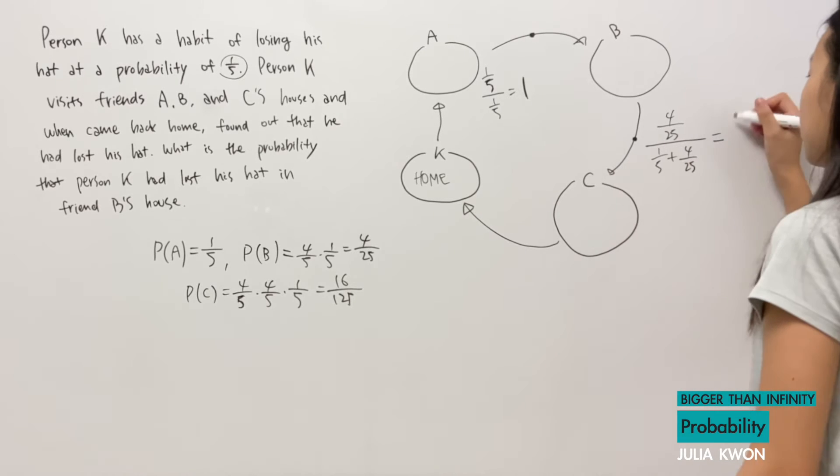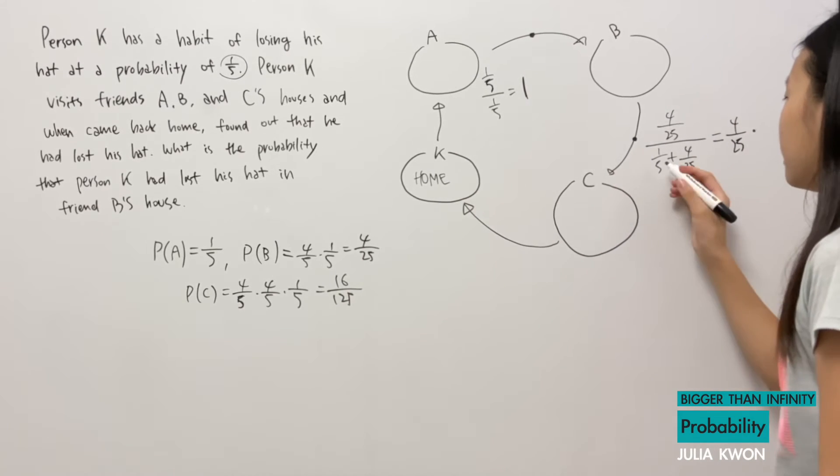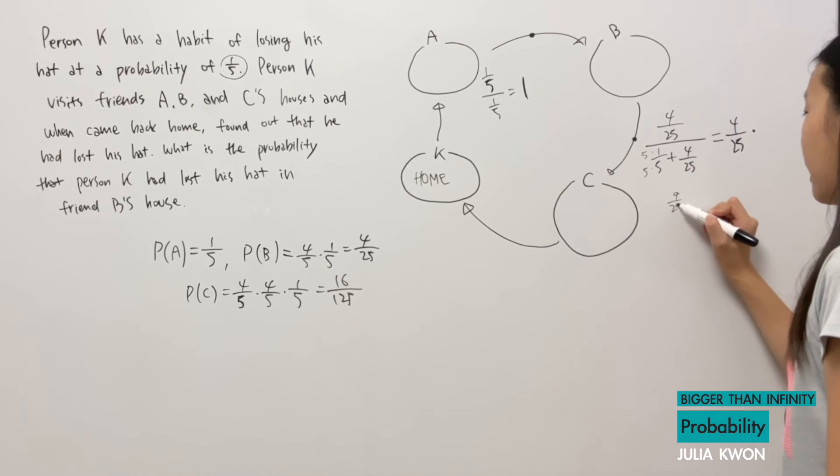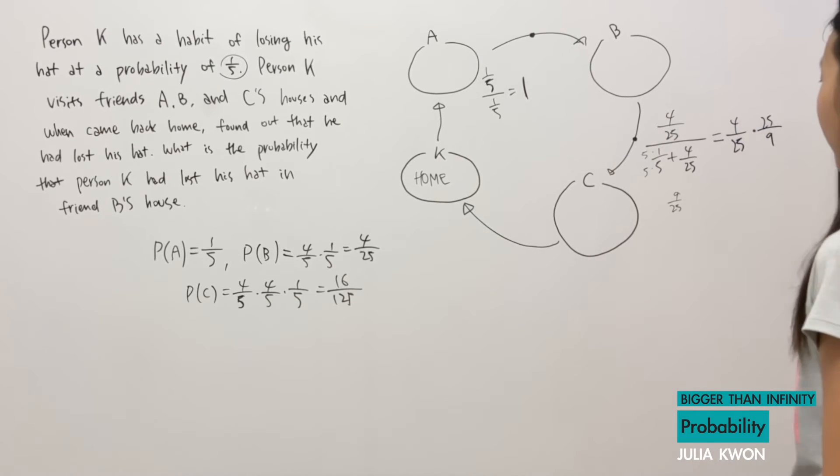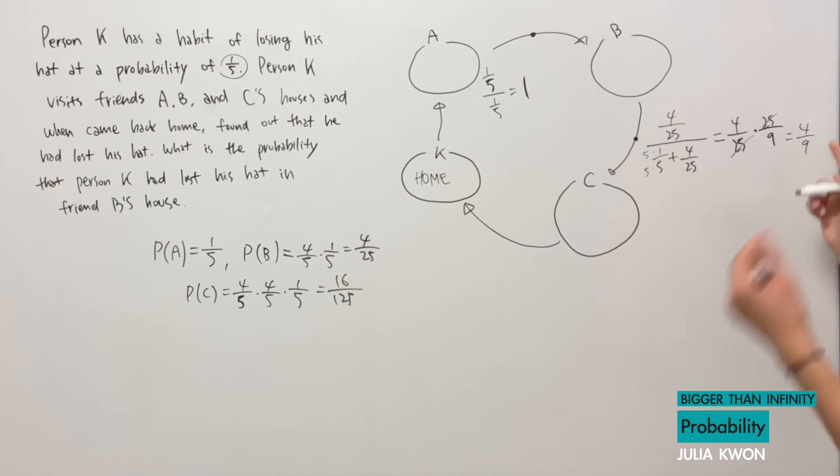So, now if we do the math here, we get 4/25 multiplied by—this is times 5 on top and bottom, so that is 9/25, which means that it's times 25/9. And these two will cancel, making 4/9.